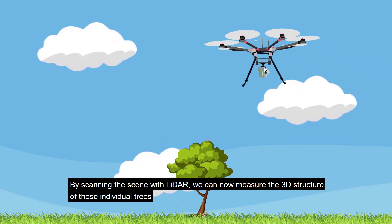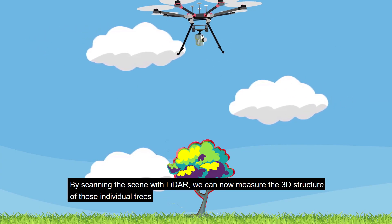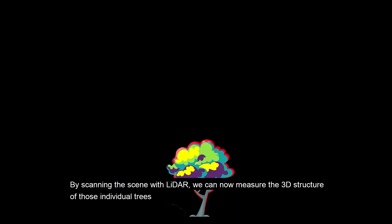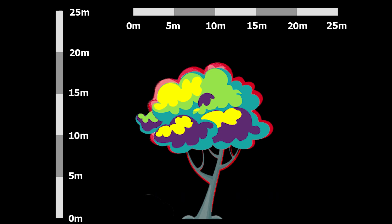By scanning the scene with LiDAR, we can now measure the 3D structure of those individual trees, including properties such as canopy height and volume.